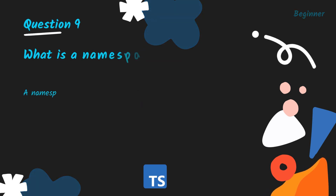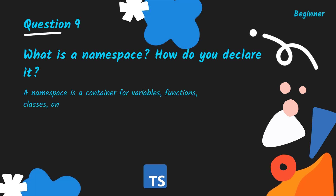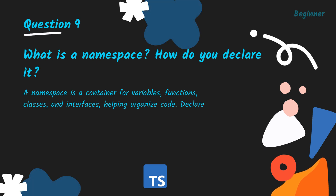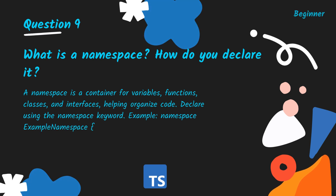What is a namespace and how do you declare it? A namespace is a container for variables, functions, classes, and interfaces, helping organize code. Declare it using the namespace keyword. Example: namespace ExampleNamespace { }.